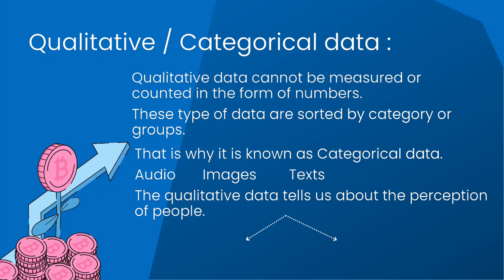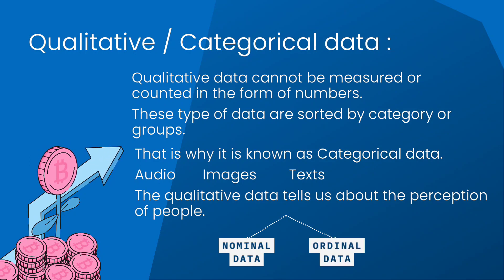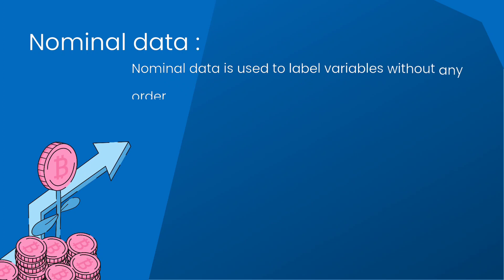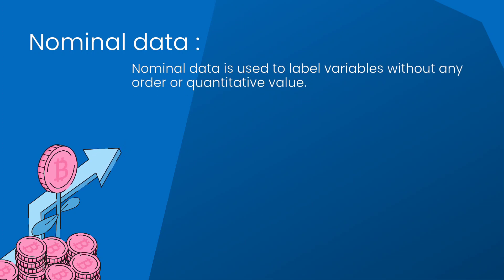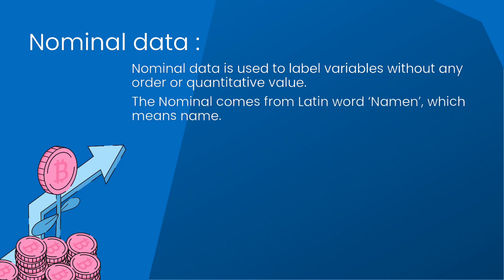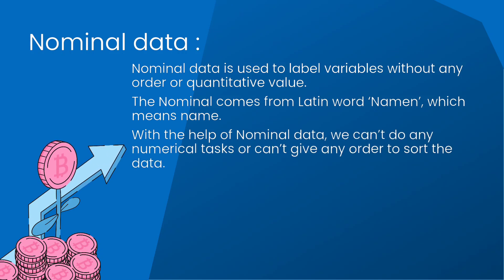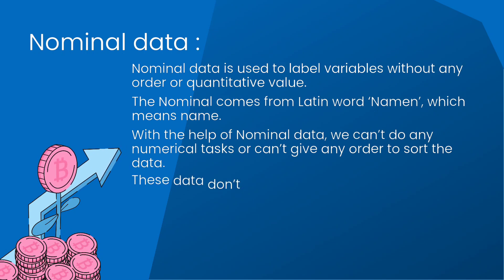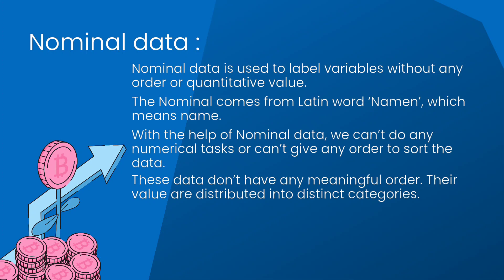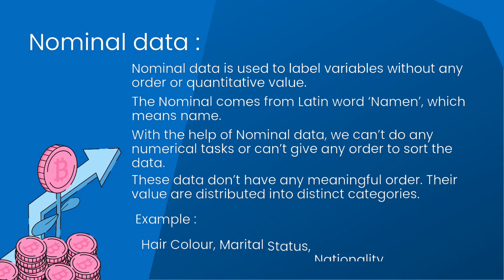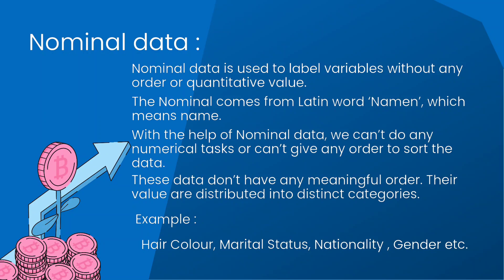Qualitative data is further classified into two parts: nominal data and ordinal data. Nominal data is used to label variables without any order or quantitative value. The word nominal comes from the Latin word 'nomen' meaning name. With nominal data we can't perform any numerical task or give any order to sort the data. Examples include hair color, marital status, nationality, and gender.